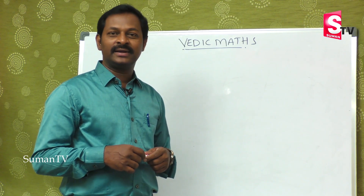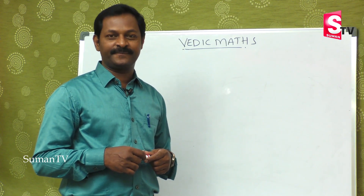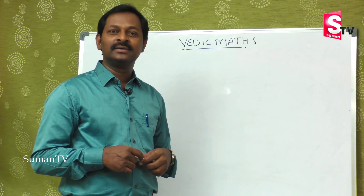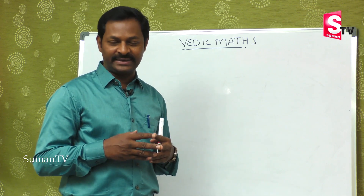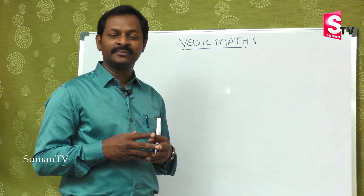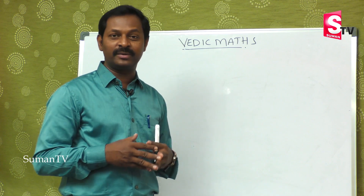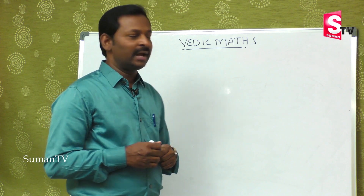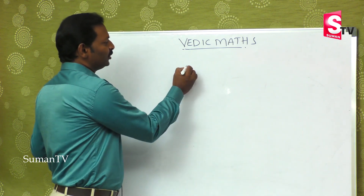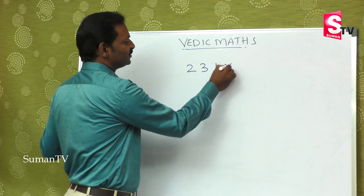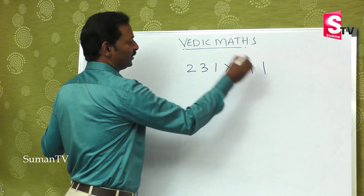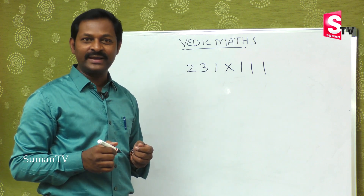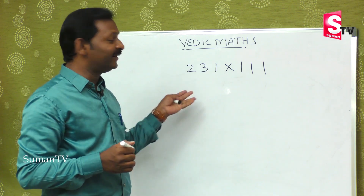Welcome to our channel, Suman TV Education. For the last few episodes, you are learning the easiest method of doing mathematics. In the last class, we learned how to multiply by 11. Today, we are learning how to multiply by 111, which is a 3-digit number.